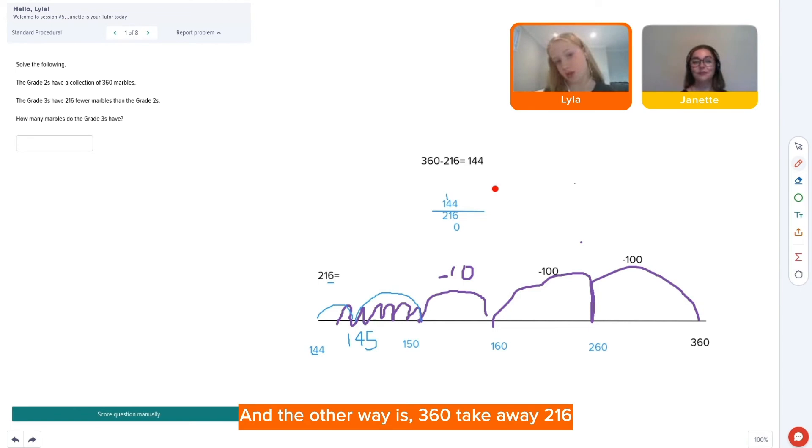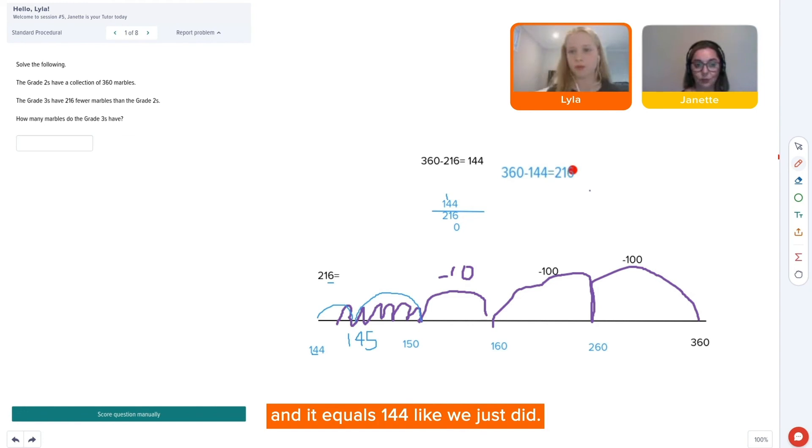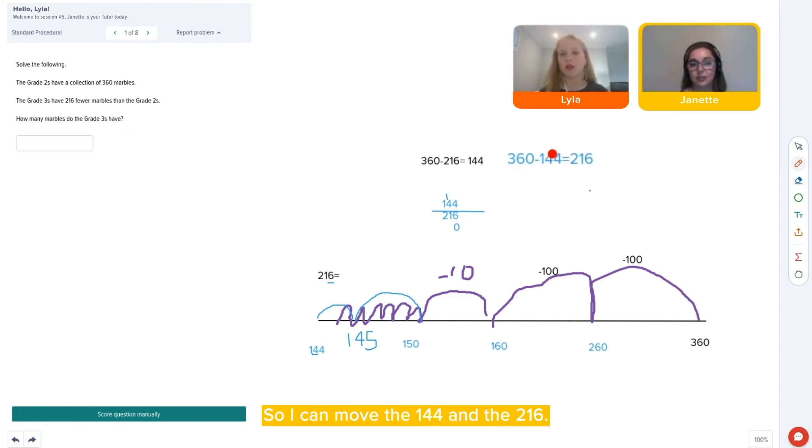Exactly. And the other way is 360 take away 216 and it equals 144 like what you just did. So I can move the 144 and then 216.